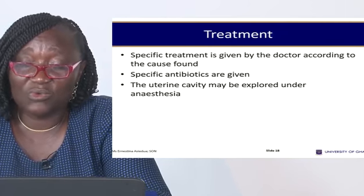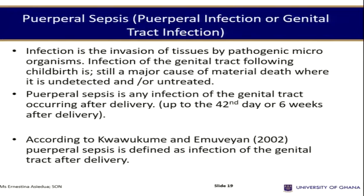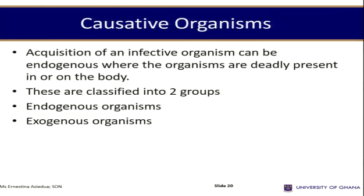Puerperal sepsis is infection of the genital tract occurring after delivery up to the 42nd day. It is important to identify the causative organism. These organisms are classified as endogenous — coming from within the body — or exogenous — coming from outside. Endogenous organisms are normally present in or on the body where they cause no harm.